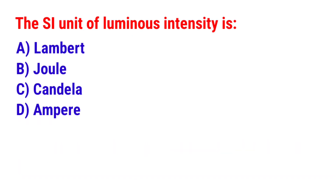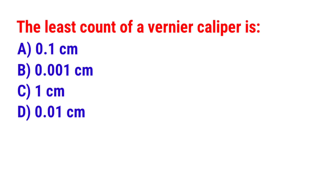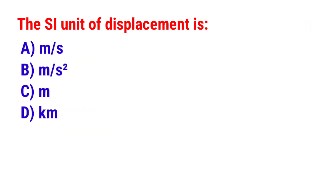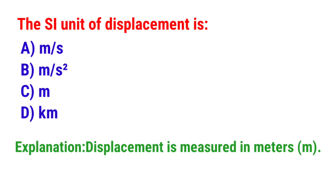Next question: The SI unit of luminous intensity is? The answer is option C — Candela. Next question: The least count of a vernier caliper is? The answer is 0.01 centimeters. Next question: Which of the following instruments is used to measure pressure? The answer is option A — Barometer. Next question: The SI unit of displacement is? The answer is option C — Meter.